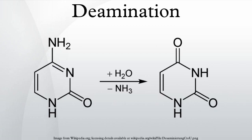Deamination is the process by which amino acids are broken down if there is an excess of protein intake. The amino group is removed from the amino acid and converted to ammonia. The rest of the amino acid is made up of mostly carbon and hydrogen, and is recycled or oxidized for energy.